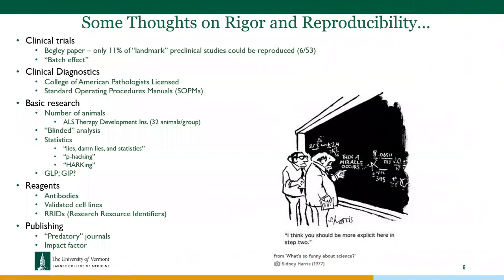That institute is now redoing those studies using 32 animals per group. Who can afford that in academia? They get no NIH funding because NIH won't fund them at that scale and they couldn't afford it anyway — so they rely exclusively on donors. They're redoing all the studies with very large animal groups and blinded analysis. In many instances, the original investigators were not blinded to the experimental groups.